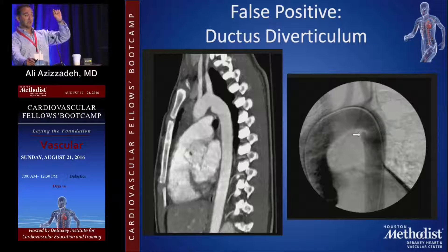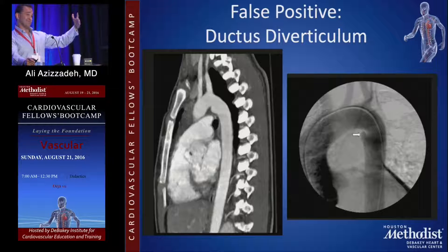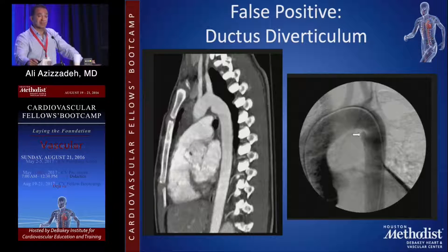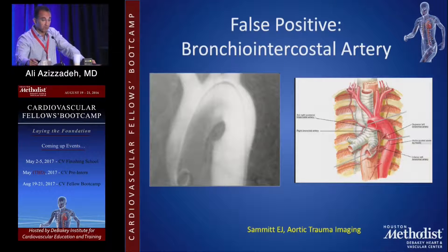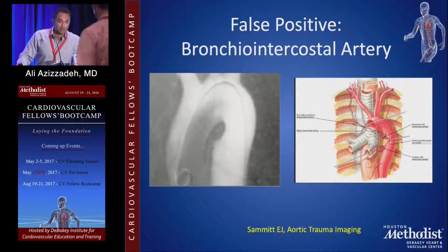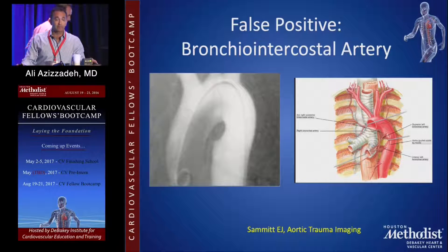How do you know it's not an aortic injury? Two reasons: number one, there is no periaortic hematoma, and number two, they don't have the mechanism. People have done TEVAR for ductus diverticulum in the past, so you wouldn't be the first one to miss it. The third false positive is the broncho-intercostal artery, which can cause a washout on contrast in this location — another anatomical variant to be aware of.